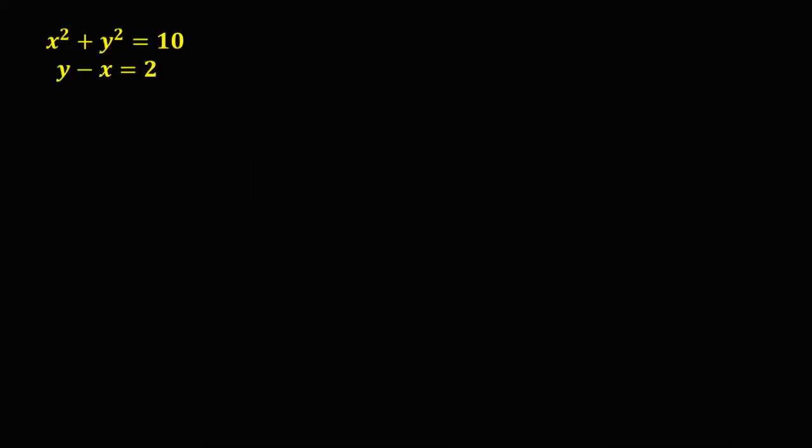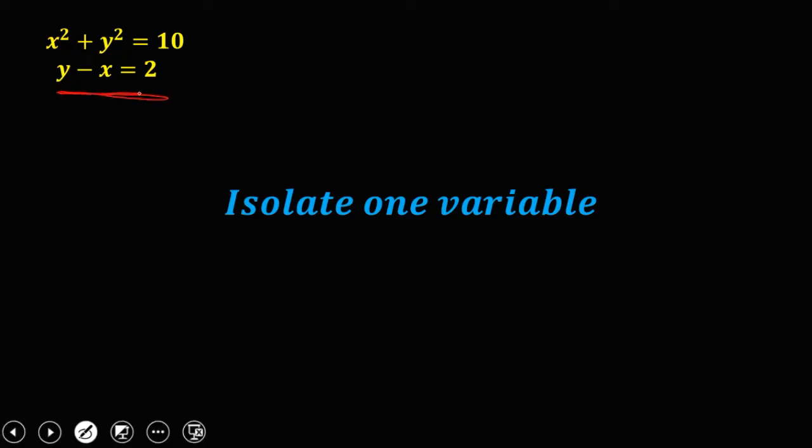Now, in substitution method, we need to isolate one variable. So you can isolate x or isolate y. It depends on the given. So on this given, we're going to use this equation to isolate one variable.